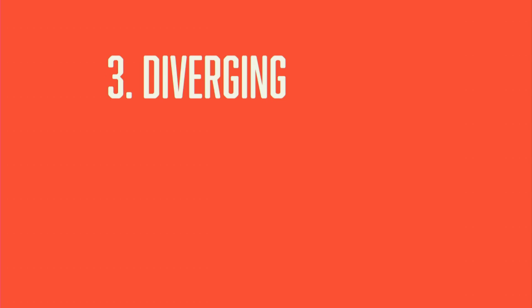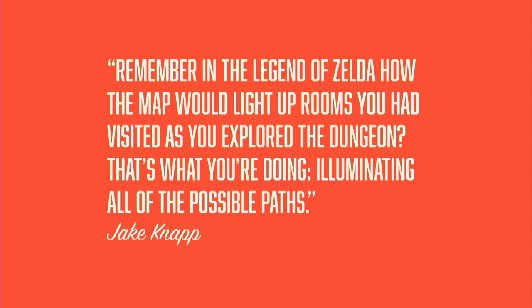The next step is probably the most important: diverging. This is about generating as many different ideas as possible and exploring every single possible solution before moving forward. The author of the design sprint book described it as: remember in Legend of Zelda, how the map would light up different rooms as you moved around the dungeons? That's what you're doing — going around all the different possible areas and exploring everywhere you could go before deciding which direction to take. The best way I like to do this is with sketching, because most people in technology don't use pen and paper regularly anymore, which means no one really has an advantage over anyone else.